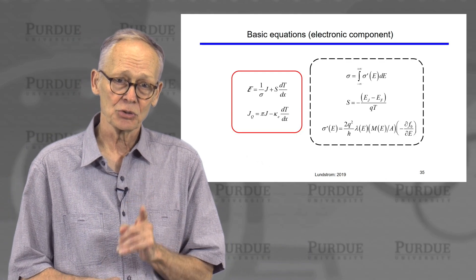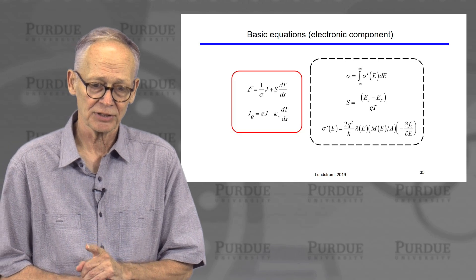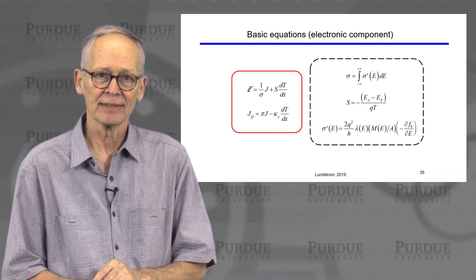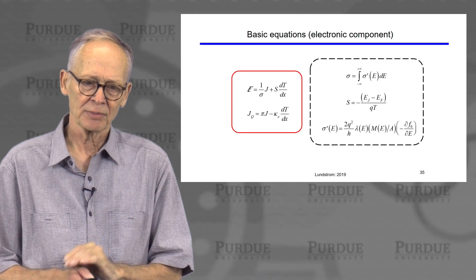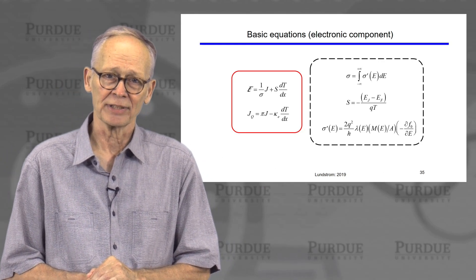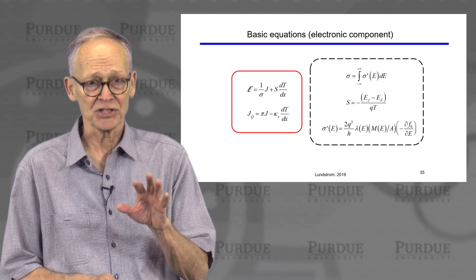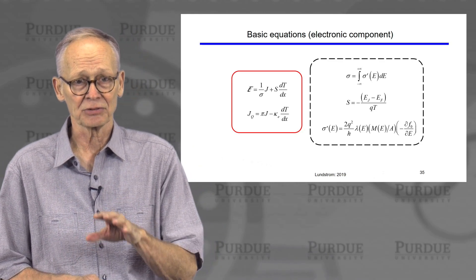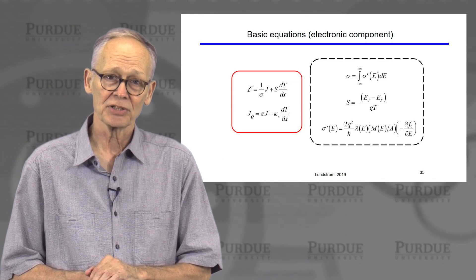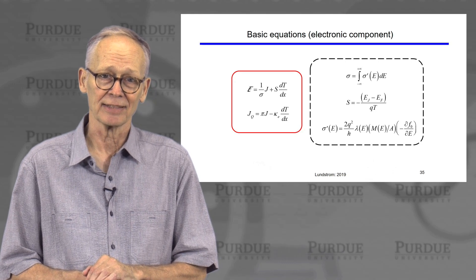So we have discussed two of the four electrical transport coefficients. We did the conductivity first, and now we understand the Seebeck coefficient. Both of them are closely related to the differential conductivity, which can be directly related to the channels, band structure, and scattering physics. Our next transport coefficient is the Peltier coefficient — that's what we'll talk about in the next section.